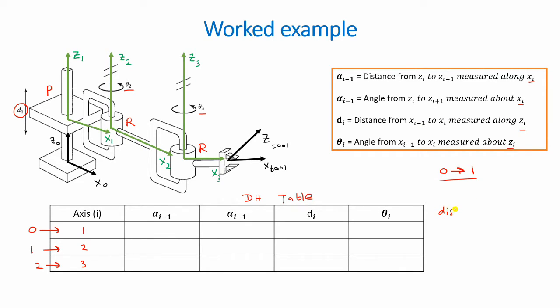So let's have a look at it. For a i minus 1, we want the distance from z0 to z1 about our x0. So the distance between our z0 and our z1 along x0. And you would see that this value is actually 0 because z0 and z1 are in line with each other. And so there is no displacement along the x-axis. The second value alpha i minus 1 looks at the angle between z0 and z1 about x0. So this is the angle z0 has to rotate to align with z1 about x0 axis. And as they are both pointing vertically upwards and in line, this angle is 0.